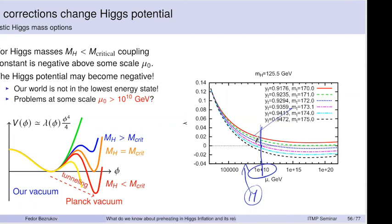Another question: can Q-balls form in Higgs inflation models? The Higgs has U(1)_Y charge, so in principle one could imagine gauge Q-balls. My understanding is that there is no global charge in the model — the charge is gauged. So you don't have topology-sustained or charge-sustained classical configurations in this model, making it hard to make Q-balls.